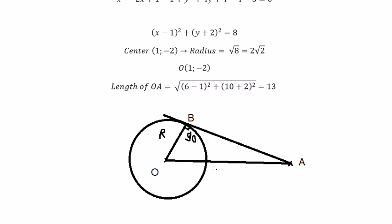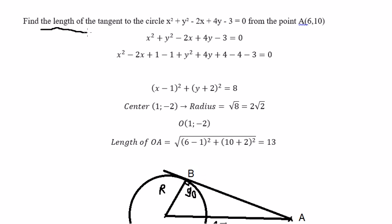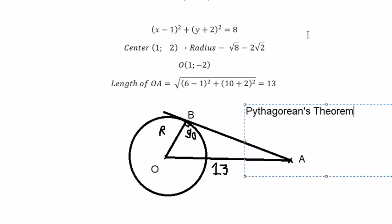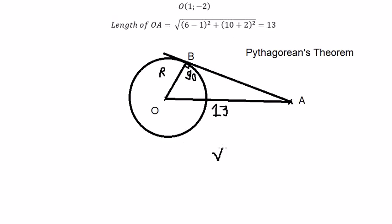OB is the radius of the circle, so OB equals 2 multiplied by the square root of 2. OA we just calculated is 13. The question asks for the length of the tangent AB. Since we have a right triangle at B, we use the Pythagorean theorem: AB equals the square root of OA squared minus OB squared, which is the square root of 13 squared minus (2 times the square root of 2) squared.